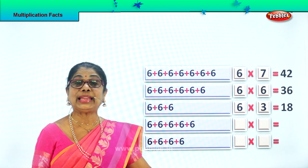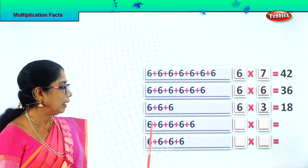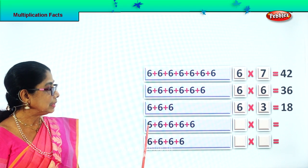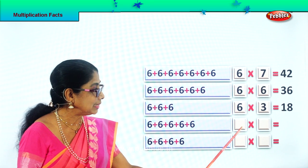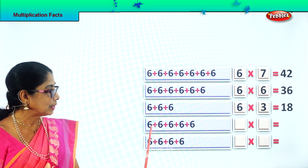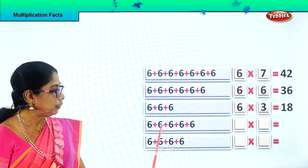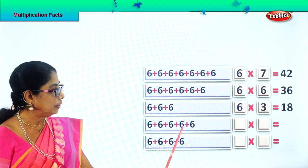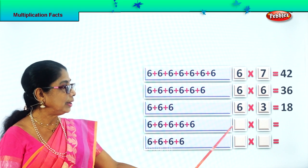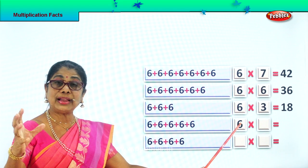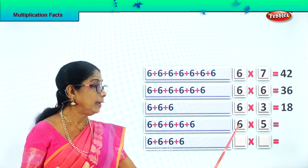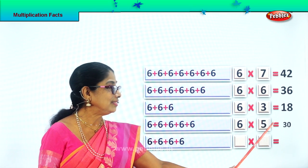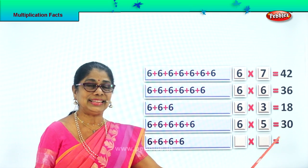Look here, next. 6 how many times? First you write 6. 1, 2, 3, 4, 5. 6 how many times? 5 times. 6 fives are 30. Good. 6 fives are 30.